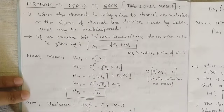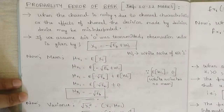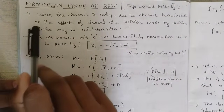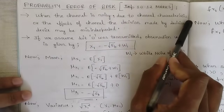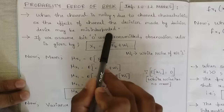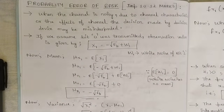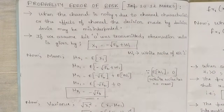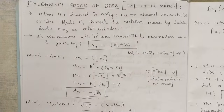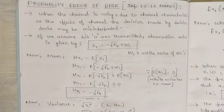This is the concept of the probability of error of BPSK — a derivation where you need to know some terms, which I am going to explain. When the channel is noisy due to channel characteristics, the decision made by the decision device may be misinterpreted. In the previous video we saw that when the signal passes through an integrator, the output is given to the decision device, which decides whether bit 0 or 1 was transmitted — and that can be corrupted. That's the main motivation for finding the probability of error.